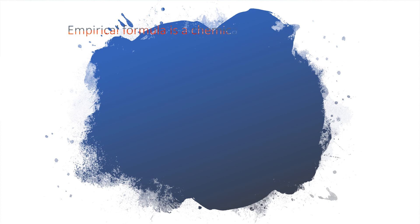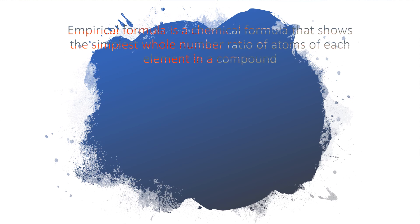Students should also know the meaning of empirical formula. Empirical formula is a chemical formula that shows the simplest whole number ratio of atoms of each element in a compound.